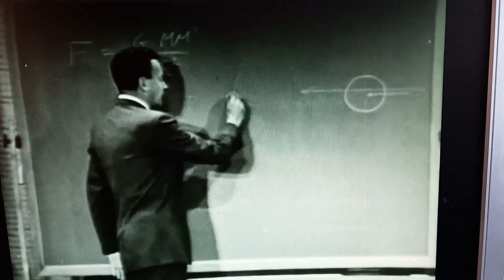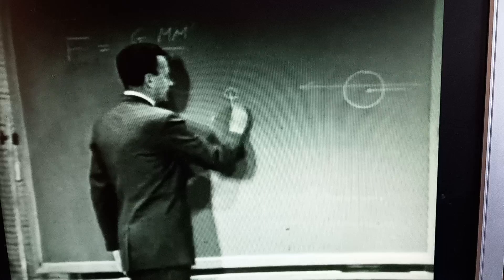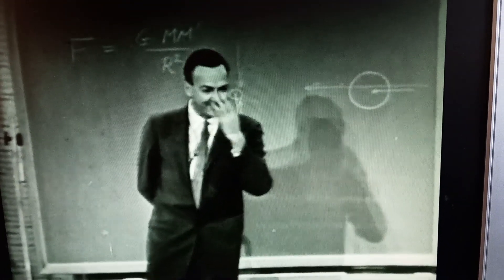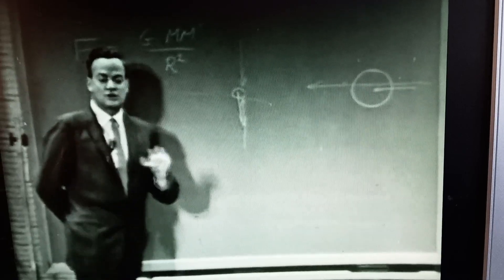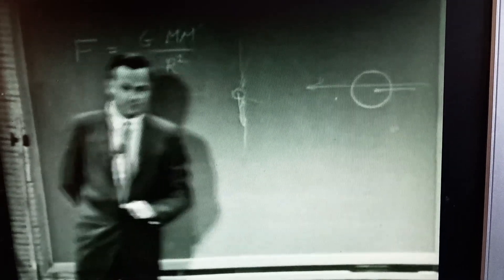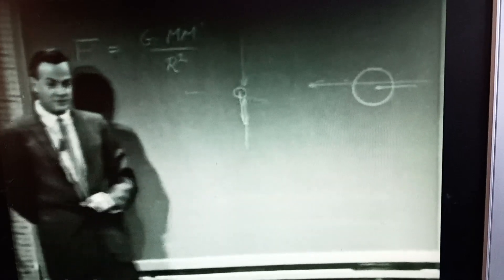If the earth is moving this way, more particles will hit it from the front than from the back. If you're running in the rain, more rain hits you from the front of the face than in the back of the head because you're running into the rain. And so as the earth is moving in this direction, it's running into the particles rather and running away from the ones that are chasing it from behind.